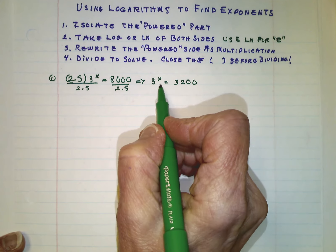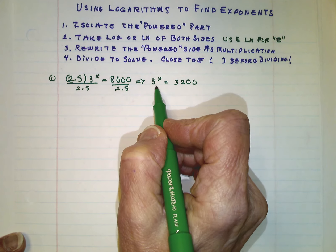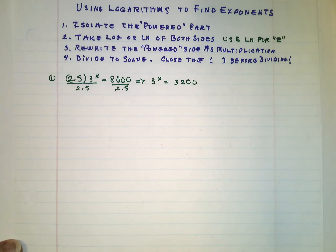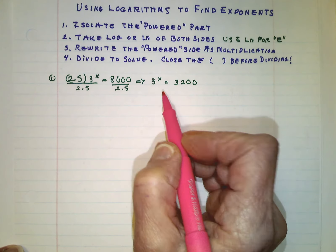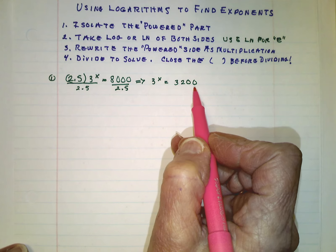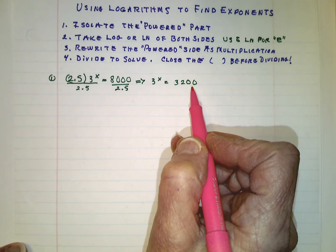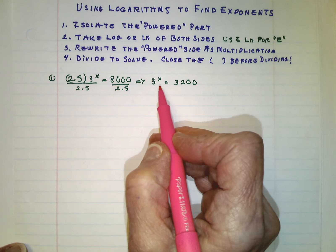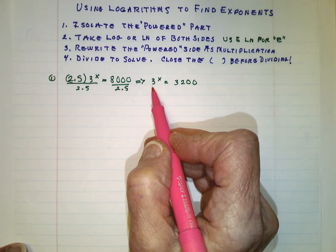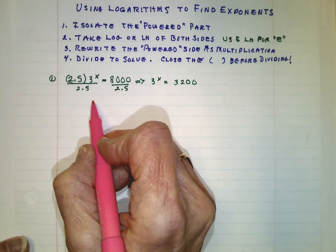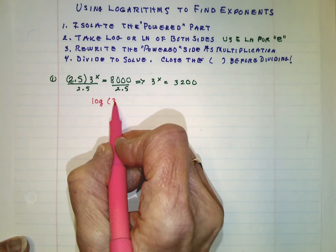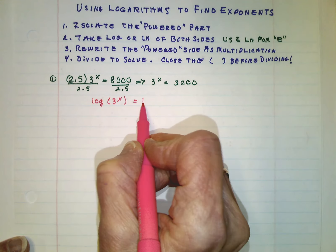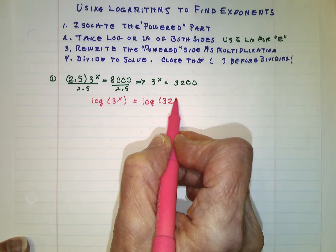We still just don't want to endlessly guess to figure out what this is worth. So we'll move on to the second step. Take either the log of both sides or the ln of both sides. They will both work. We don't have an e in this problem. So I'm going to just go ahead with log. Take the log of 3 to the x. Set that equal to the log of 3,200.